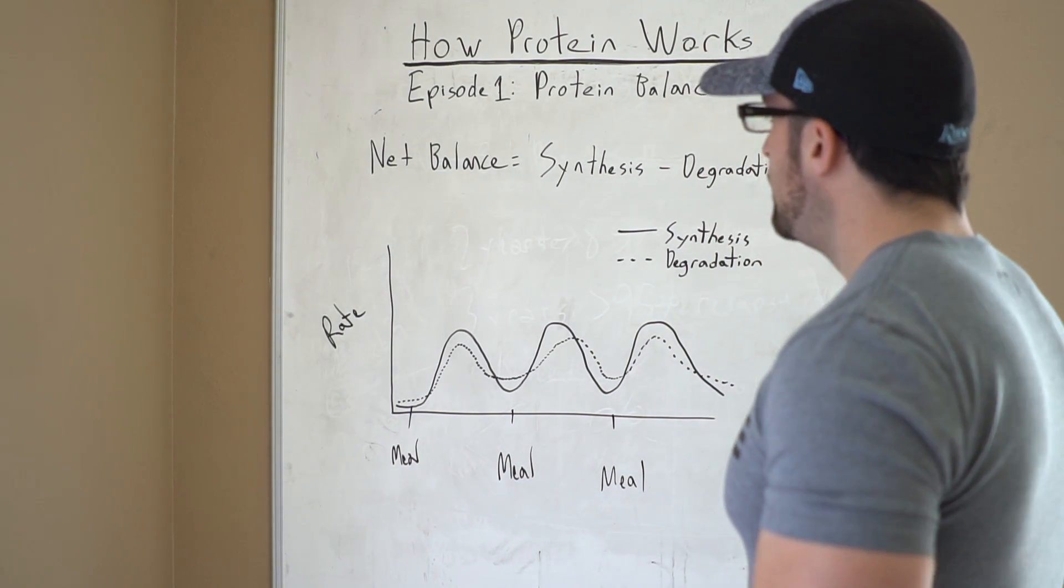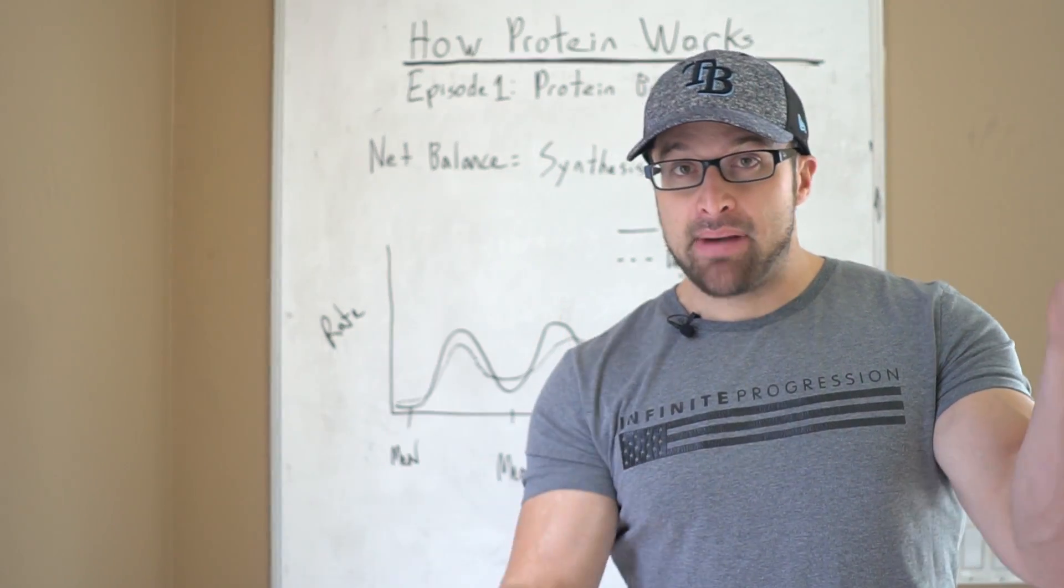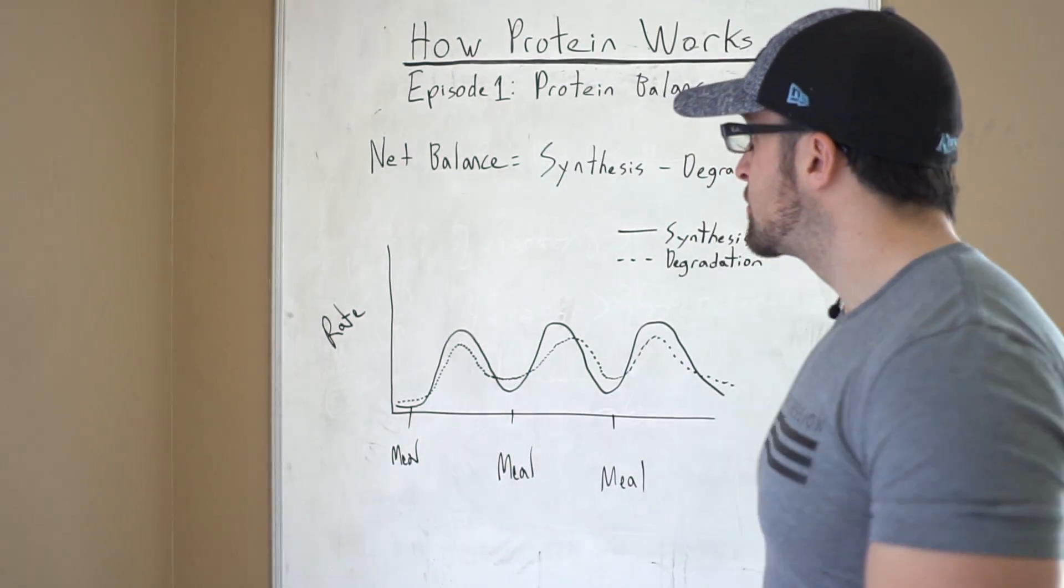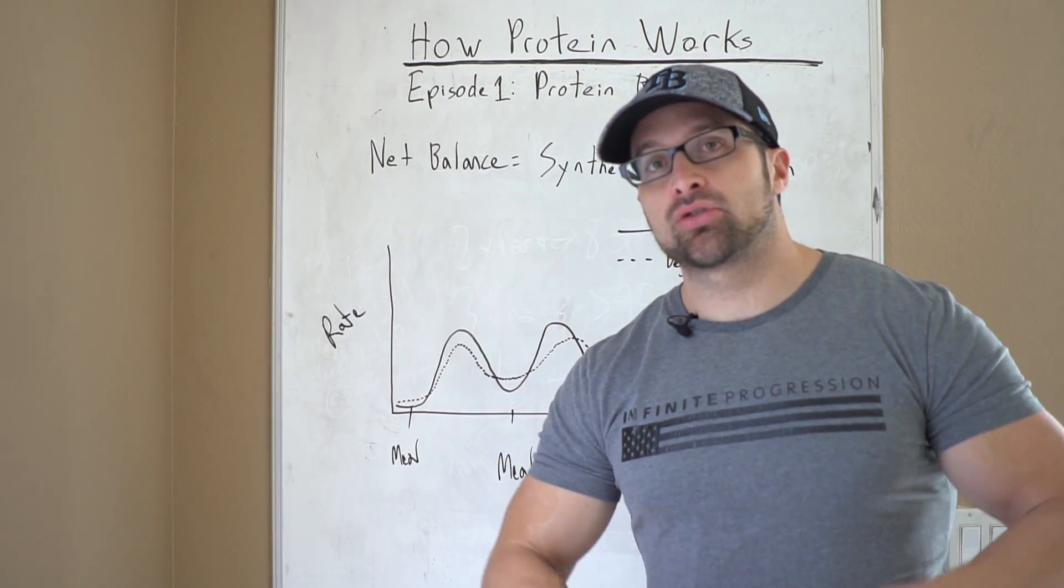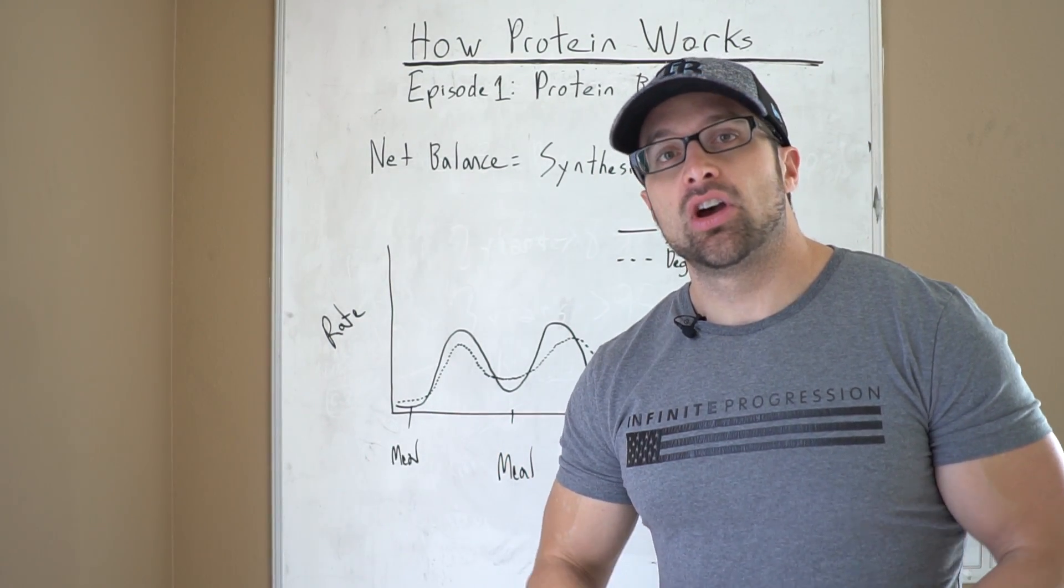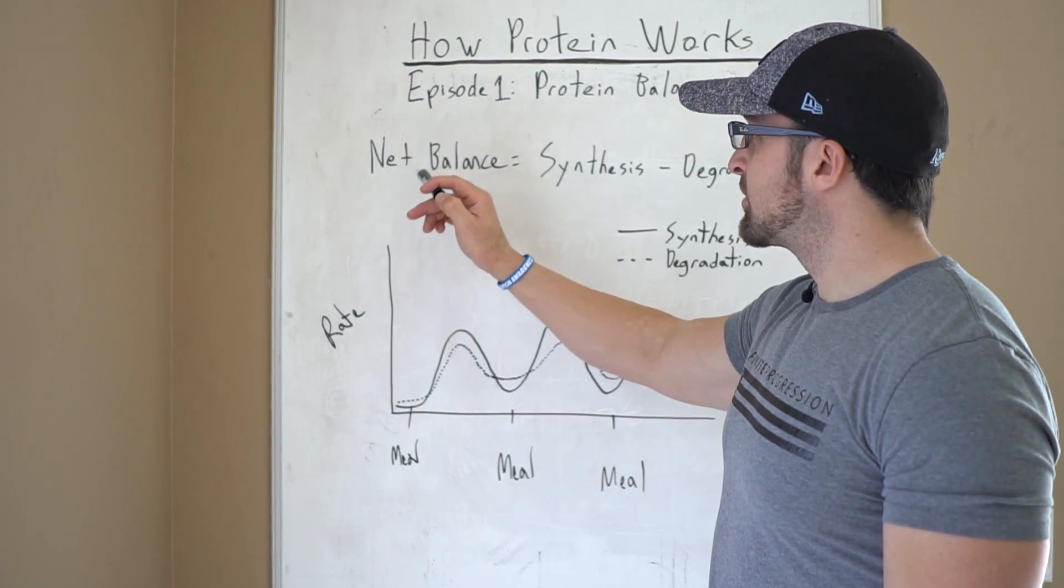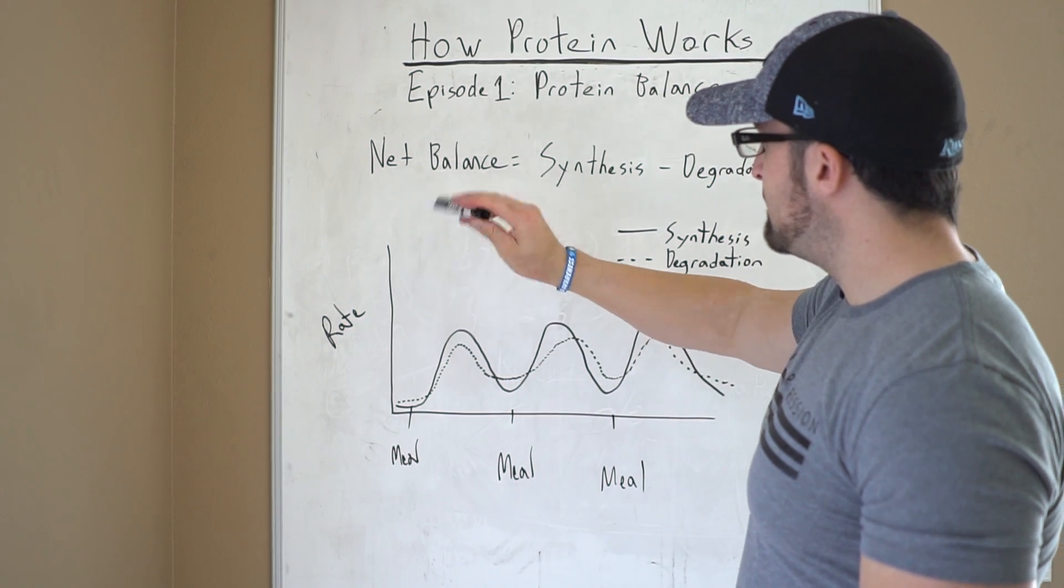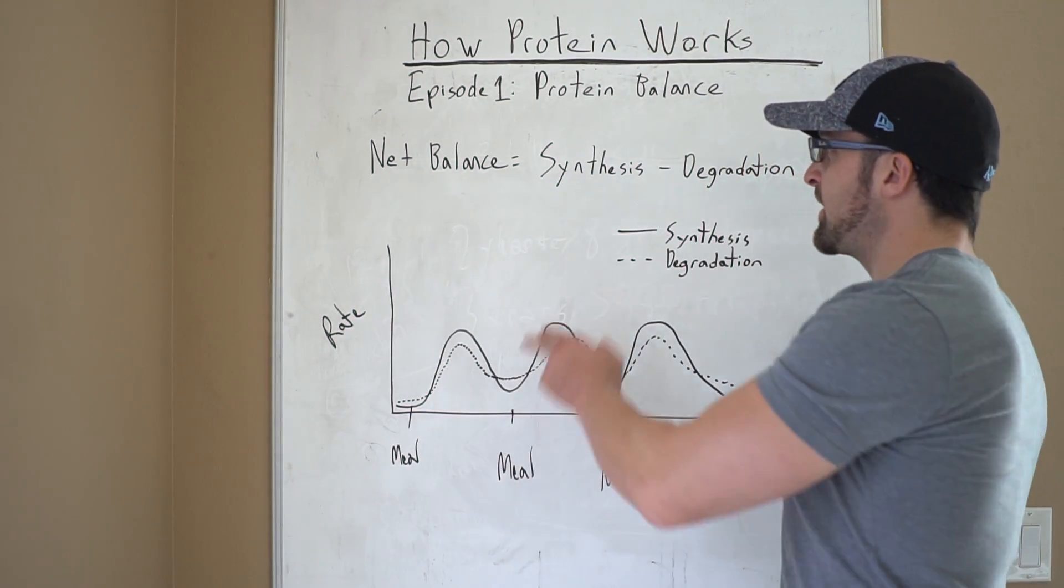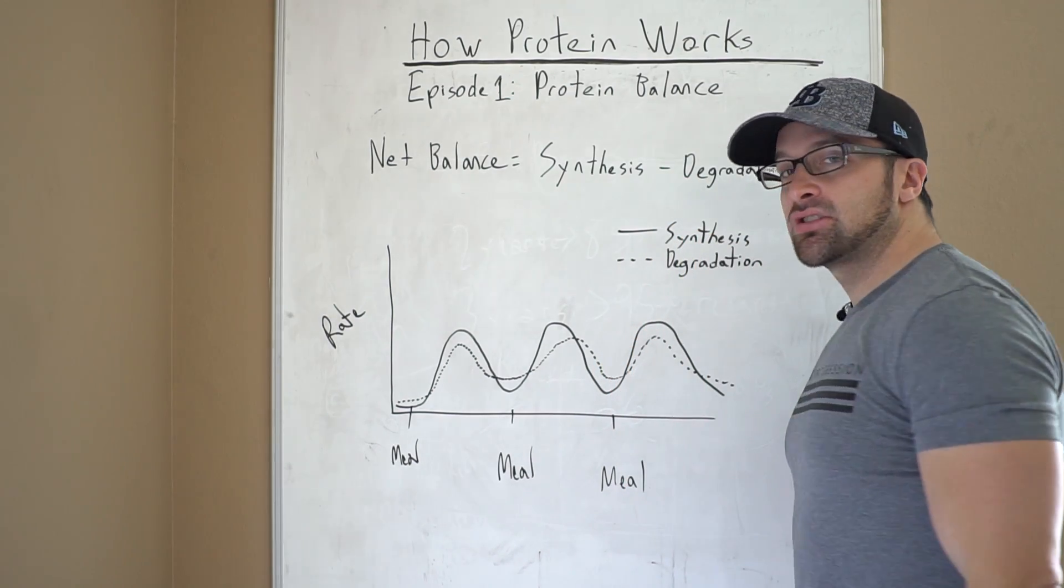But it is a little bit specific. So when we talk about net protein balance, just like we talked about calorie balance, it's a balance. So in order to build muscle, in order to be anabolic, in order to accumulate tissue, you need a positive muscle protein net balance. Net protein balance is determined by the rate of muscle protein synthesis minus the rate of muscle protein degradation.